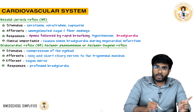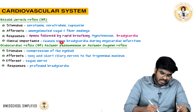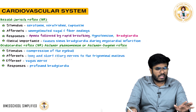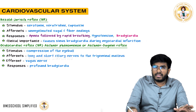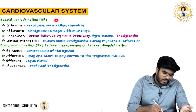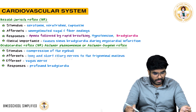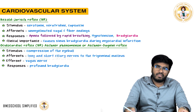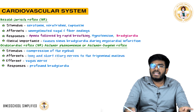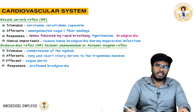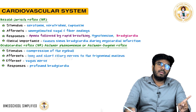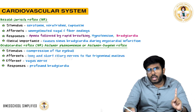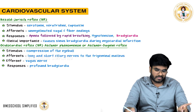The clinical importance: the Bezold-Jarisch reflex causes sinus bradycardia during myocardial infarction — that's why heart rate decreases during MI. To summarize: Bezold-Jarisch reflex is bradycardic, Bainbridge reflex (the atrial reflex) is tachycardic, and Cushing's reflex is also bradycardic. All are bradycardic except the Bainbridge reflex.